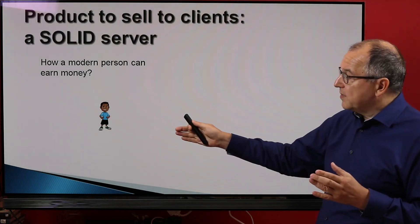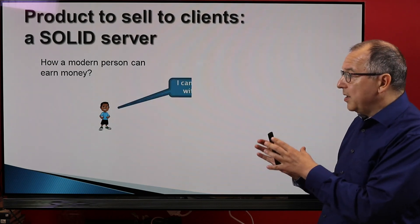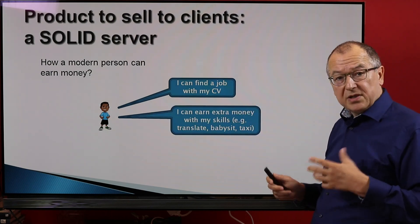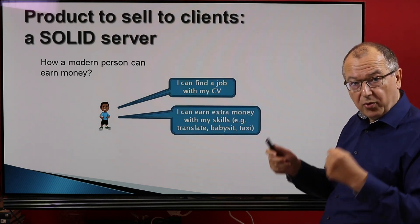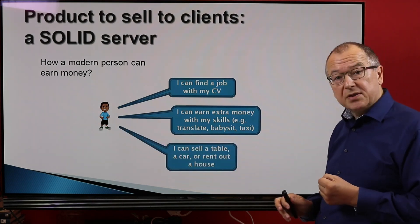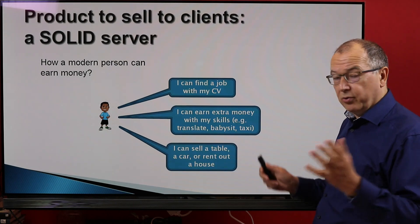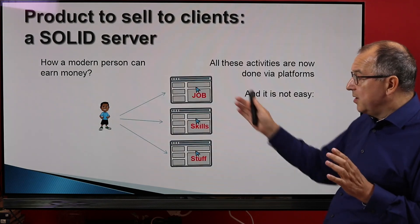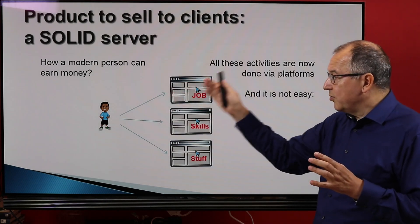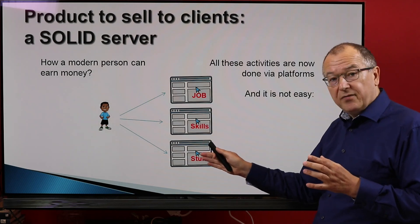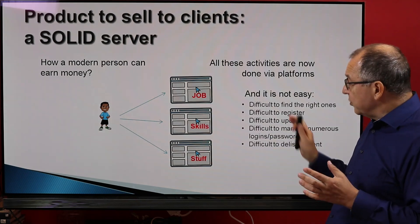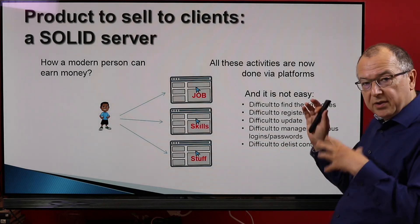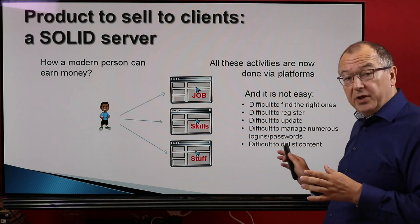Let's look at the typical client of a bank. They can earn money in roughly three ways: they can find a job with their resume, they can earn extra money with skills — driving a taxi cab or repairing computers — or they can sell stuff or rent out a house. These three things are nowadays totally associated with platforms. If a person wants to find a job, sell skills, or sell stuff, they go to platforms. It's not easy: difficult to find platforms, difficult to register, to update, to manage numerous logins and passwords.